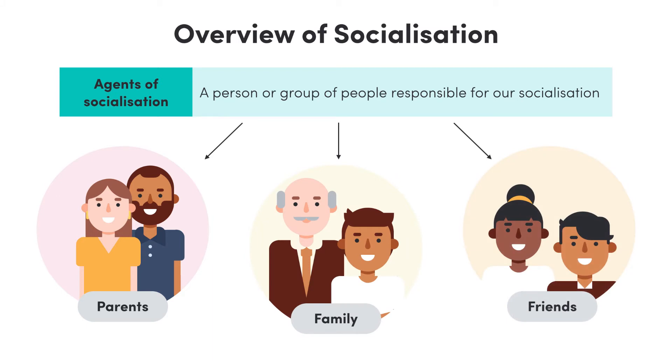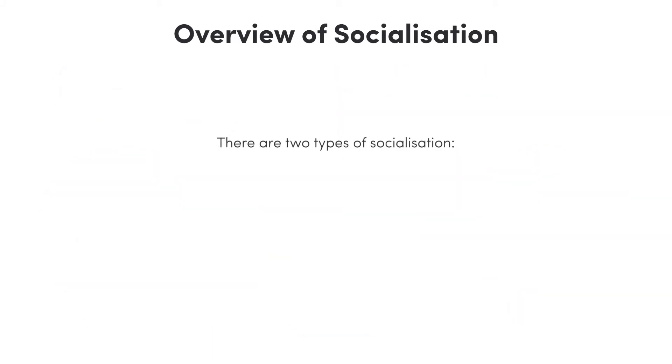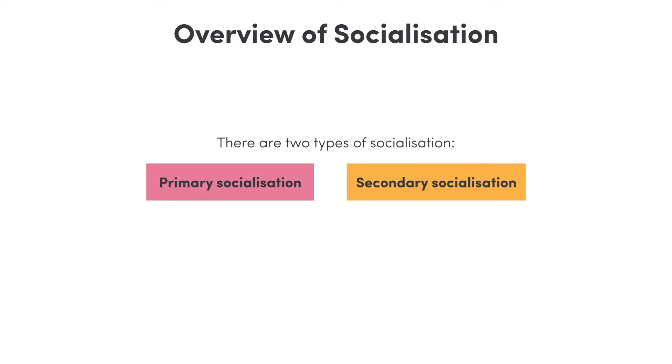There are two main types of socialisation we're going to learn about today: primary and secondary socialisation.